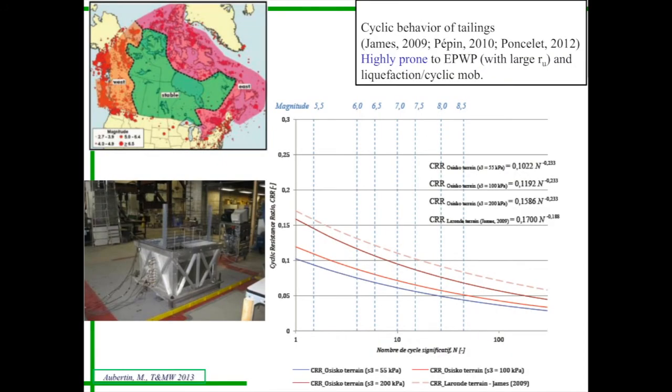Another issue that has been addressed is the effect of seismic events. This is the risk map of Canada by the Geological Survey of Canada. We see here along the St. Lawrence River and the Abitibi region, these are fairly highly prone to seismic events. Because of that, we need to be aware of the risk of liquefaction and other problems related to these earthquakes.